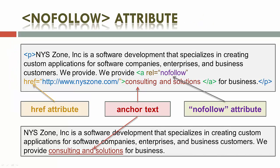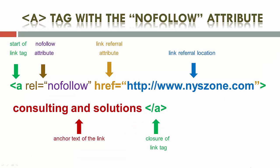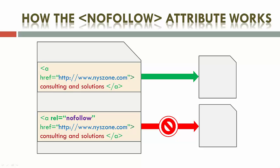The nofollow attribute specifies the relationship between the current document and the linked document — namely, it blocks rank credits that your page might give another website. The nofollow attribute is only used if the href attribute is present in the A tag. Browsers do not use this attribute in any way.